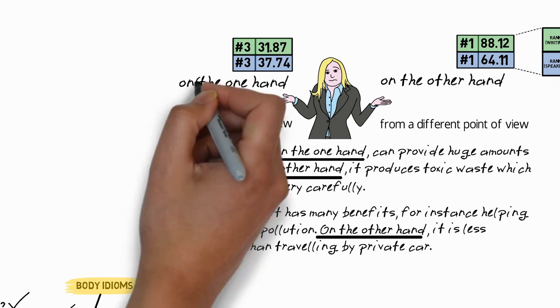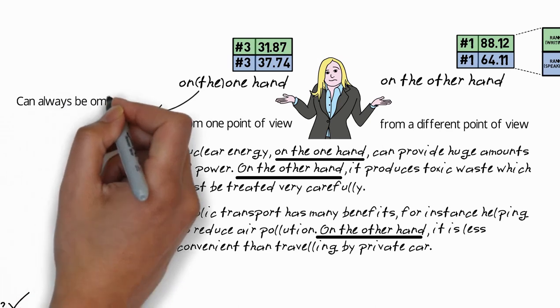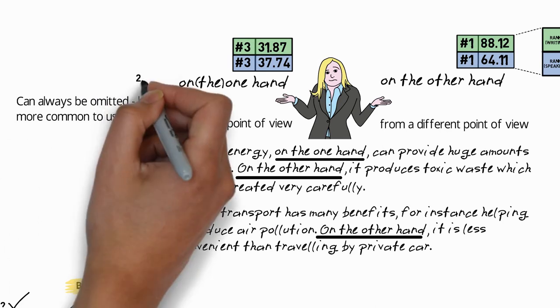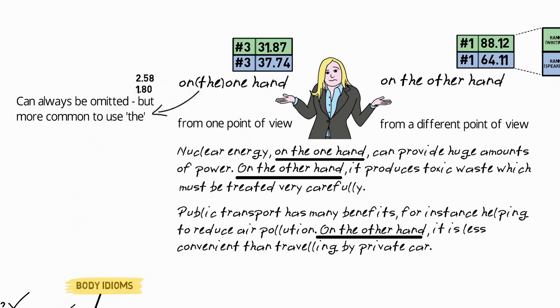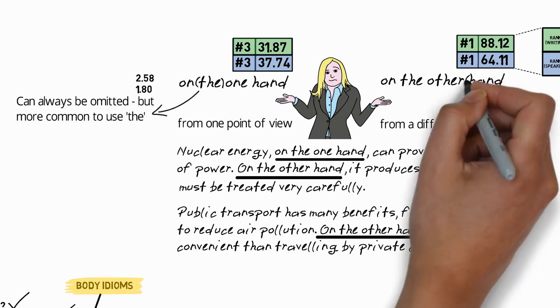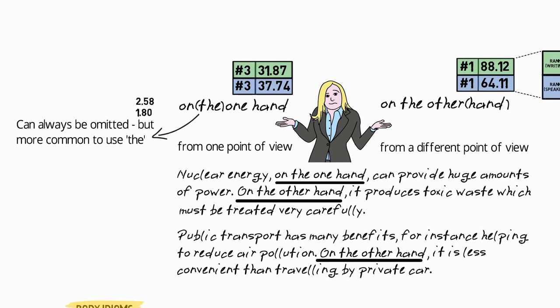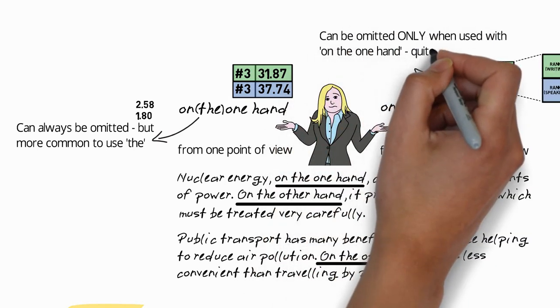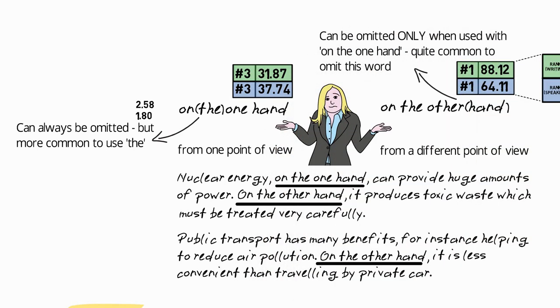Another example: public transport has many benefits, for instance helping to reduce air pollution. On the other hand, it is less convenient than travelling by private car. So the second example uses only on the other hand, and that's the reason why this idiom is more common than on the one hand, because it is often used on its own. A couple of usage notes here.